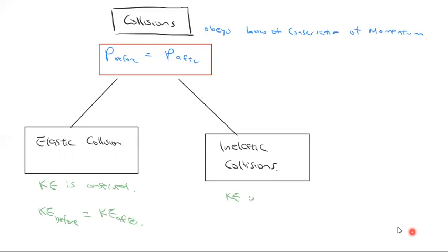That is essentially all the theory for this chapter. We've defined momentum, related it to impulse and its various factors, covered graphical analysis, and discussed the different types of collisions. If it's a collision or an explosion, it follows the law of conservation of momentum. If it's elastic, kinetic energy is conserved; if it's inelastic, kinetic energy is not conserved. Everything from here is doing questions to make sure you understand how to use these things.